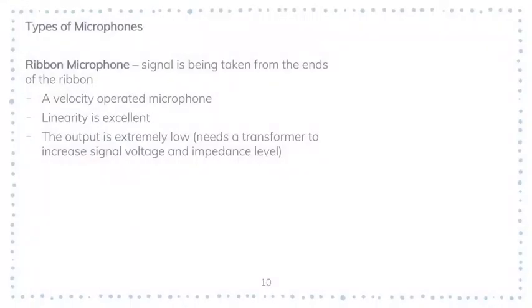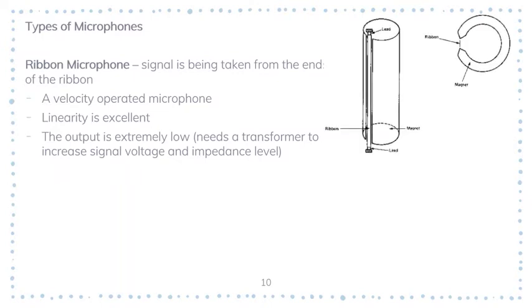The next type is the ribbon microphone. It is the logical conclusion of the moving coil principle, in which the coil has been reduced to a strip of conducting ribbon. Whenever a voice is sensed, the ribbon moves and is closely attached to a magnet, so the output is measured from the tips of the ribbon itself. Since the ribbon is only exposed in one direction, it is a velocity-operated microphone — it will not be an omnidirectional type.